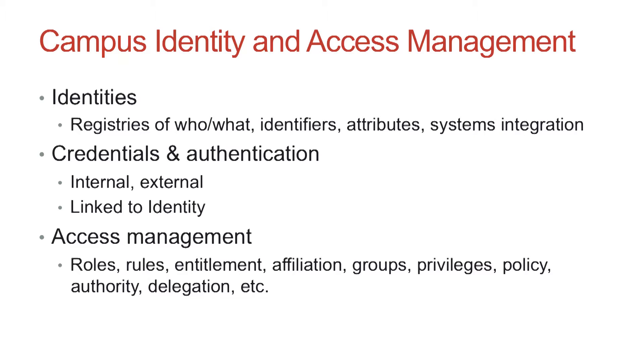An identifier is any data that can either directly identify an individual or link an individual to their online identity. When an identifier is combined with specific attributes such as whether a person is a student, faculty, staff, or something else entirely, services can use that information to make very specific automated access control decisions. It is a governance decision to determine where the information should originate that populates the various attributes, whether or not the information should be verified in some way, and what may be shared between services.